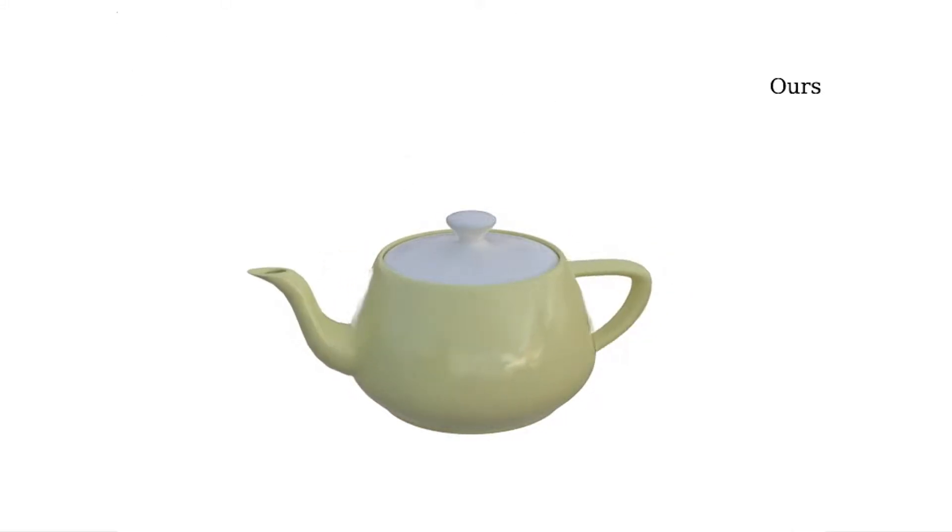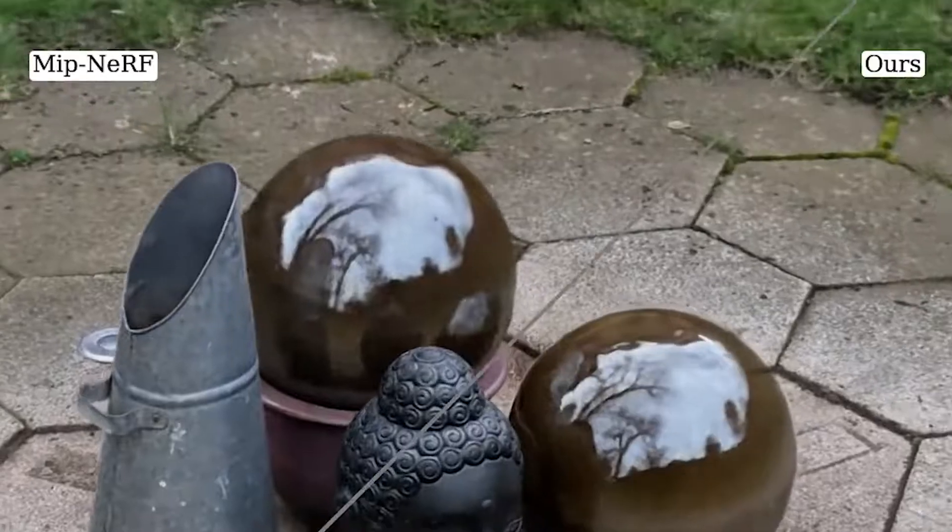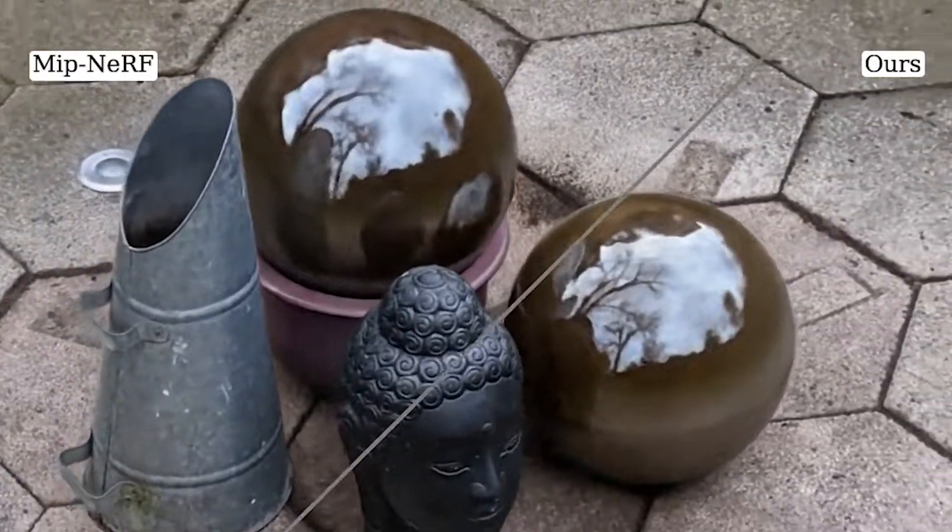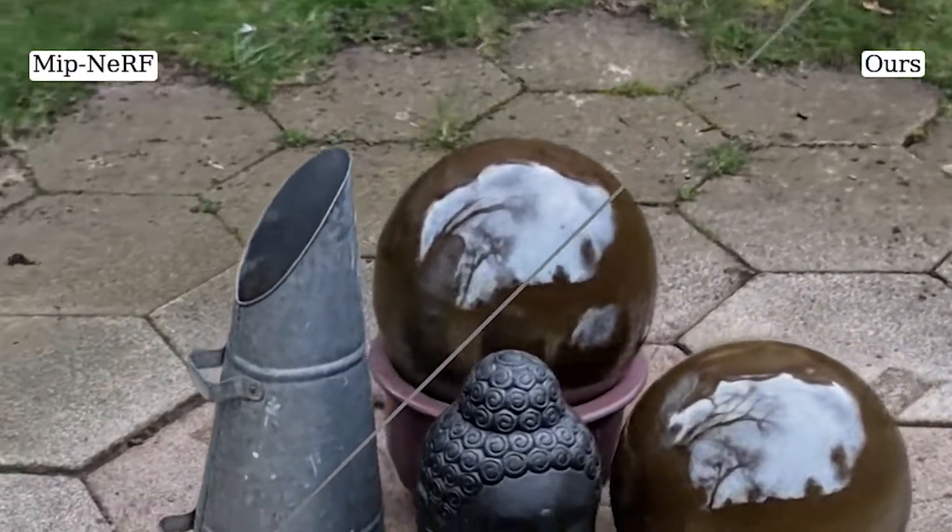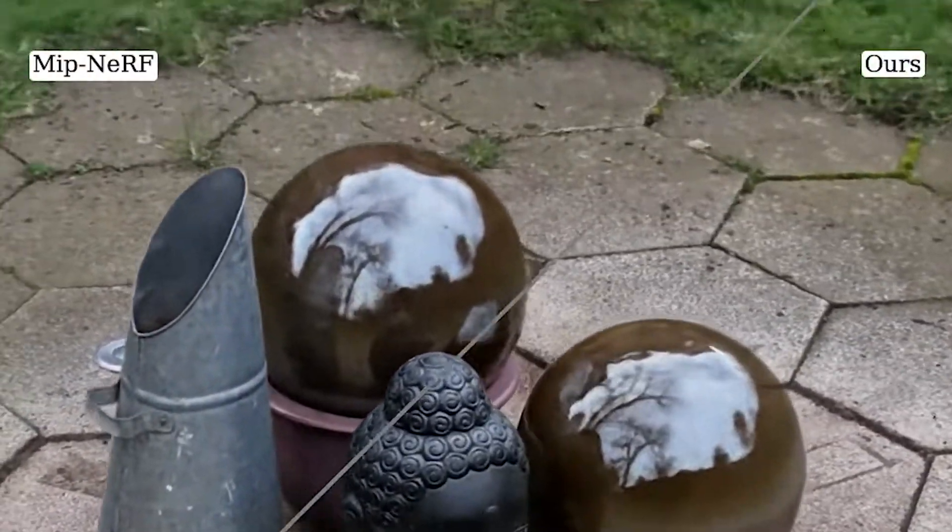We also see our method's benefit in real captured scenes. Notice how reflections off these shiny objects appear cloudy in NeRF's rendering, while our renderings contain sharp reflections of the tree.